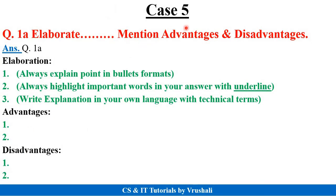The next case five: suppose the question is 'elaborate and mention advantages and disadvantages.' Elaborate means explain. First give the correct question number, then give the heading 'Elaboration' or the topic name and elaborate it using bullets or numbering format — 1, 2, 3, 4. Next for advantages and disadvantages, give a big heading 'Advantages' and mention points 1, 2, 3, 4; then 'Disadvantages' with the topic name and points 1, 2, 3, 4 in this way.